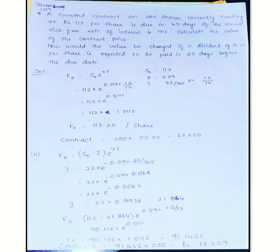The problem goes like this: A forward contract on 200 shares, the contract size is 200 shares currently trading at Rs. 112 per share, is due in 45 days. If the annual risk-free rate of interest is 9%, calculate the value of the contract price.